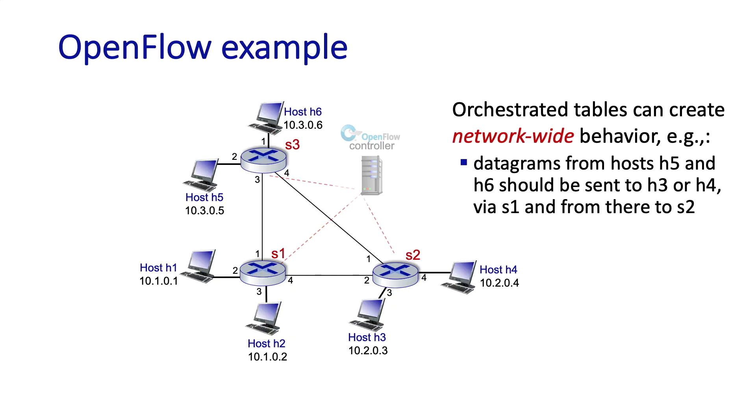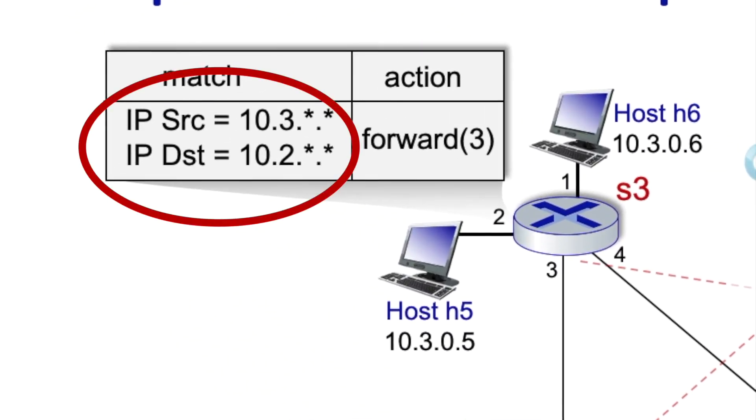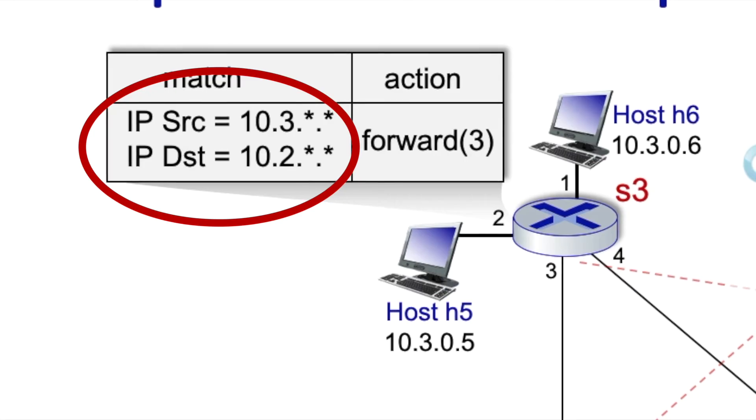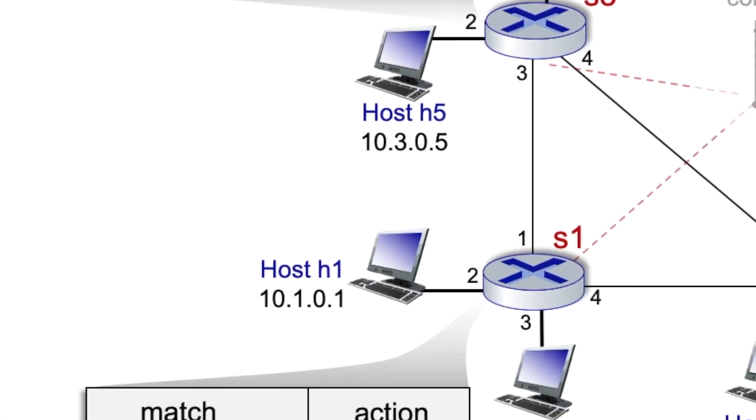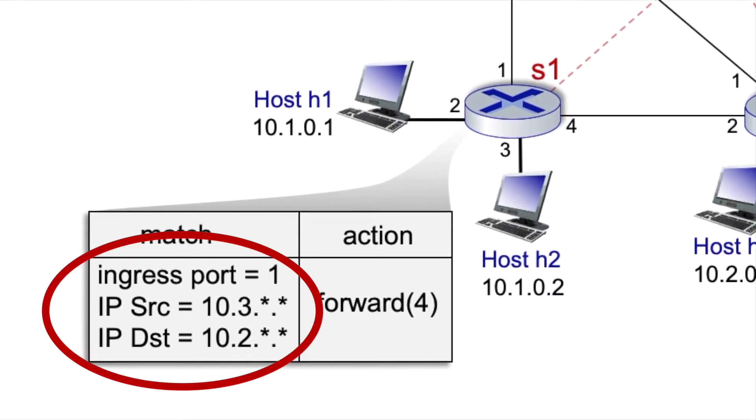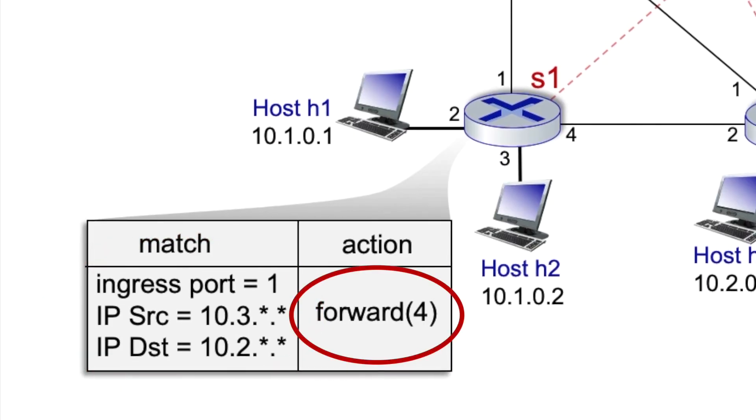Here's a simple example of specifying end-to-end routing behavior. Suppose we want traffic from Host 5 and Host 6 here, destined to Host 3 and Host 4 here, to be routed via S1. Note that this means specifically that traffic won't be forwarded over this direct link here between S3 and S2. Let's take a look at the forwarding tables. The forwarding table in S3 indicates that anything from IP addresses 10.3 slash 16 and destined to IP addresses 10.2 slash 16 should be forwarded out of local port 3. The forwarding table in S1 indicates that anything from IP address range 10.3 slash 16 and destined to 10.2 slash 16 should be forwarded out of local port 4.